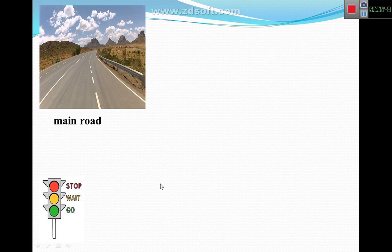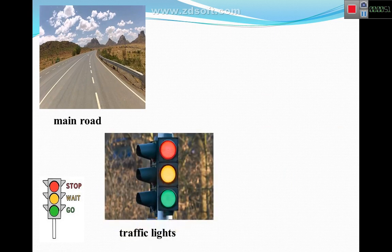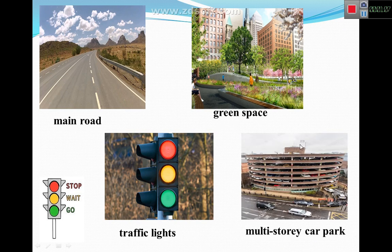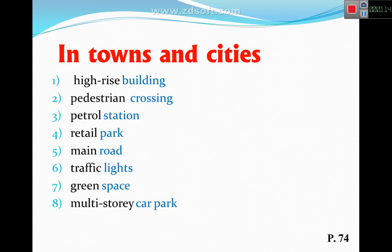The next one is main road — this is the main road. Then traffic lights — we know traffic lights, these are traffic lights. Green space — this is green space. Multi-story car park — this is a multi-story car park, a building with some floors used for parking.